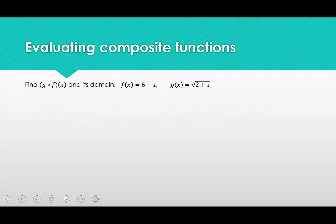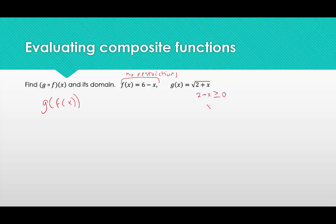Our next example: we're looking for g of f of x, so we need to be careful about the order because now it does matter. There are no restrictions on f because it's a linear equation, but there are restrictions on g — we have a radical, which means whatever is inside must be non-negative, greater than or equal to 0. So x must be greater than or equal to -2, otherwise we get imaginary numbers. We also need to determine what inputs to f keep the output ≥ -2: 6 - x ≥ -2, which gives x ≤ 8.